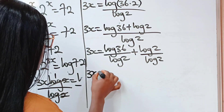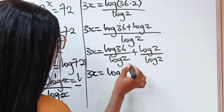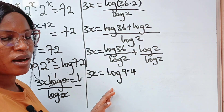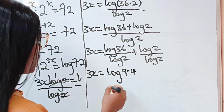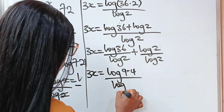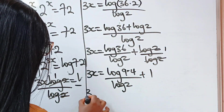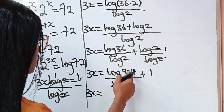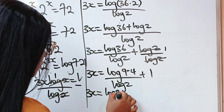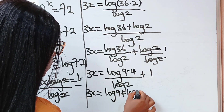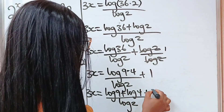So at this point, we have 3x is equal to: 36 can be expressed as 9 multiplied by 4. Remember that we are simplifying this as much as we can because we are going to prove that the answer we got is right. Divided by log 2 plus 1, because when log 2 divides itself, we have 1. So we have 3x is equal to log 9 plus log 4 divided by log 2, plus 1.